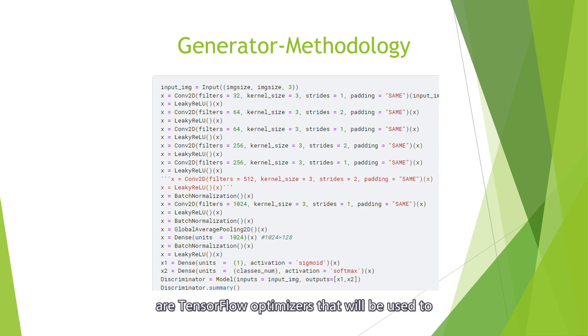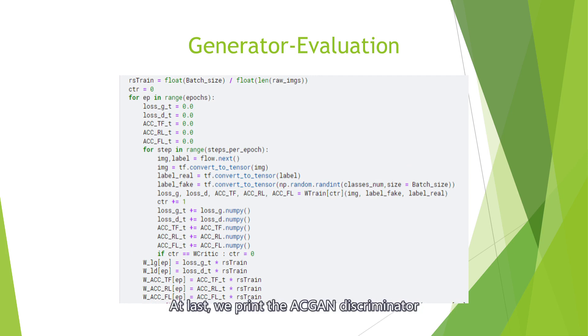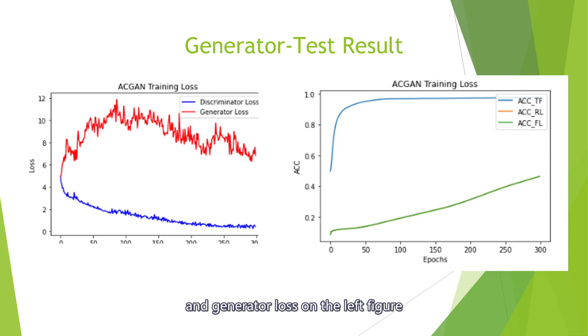At last, we print the AC GAN discriminator and generator loss on the left figure. These are the pictures we generated.